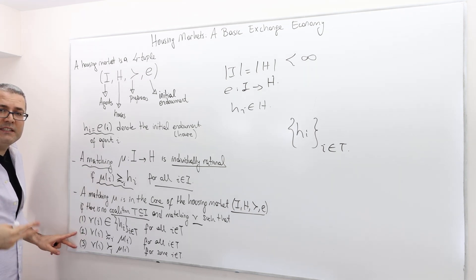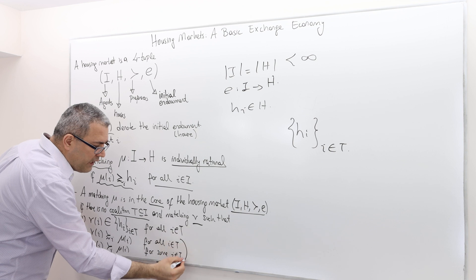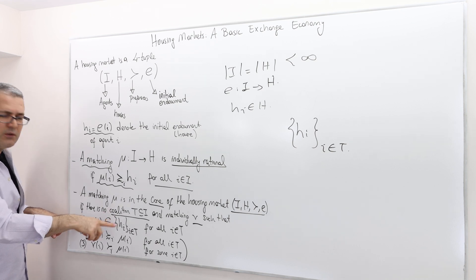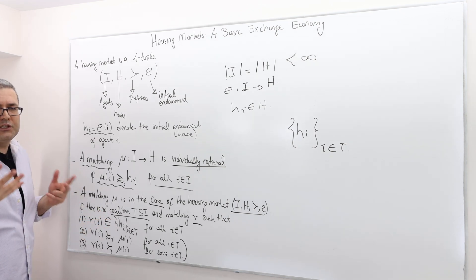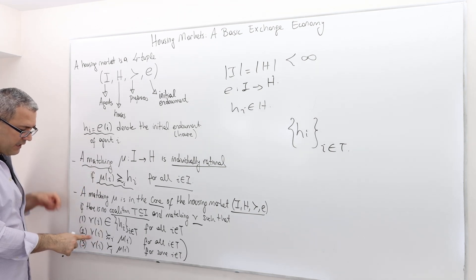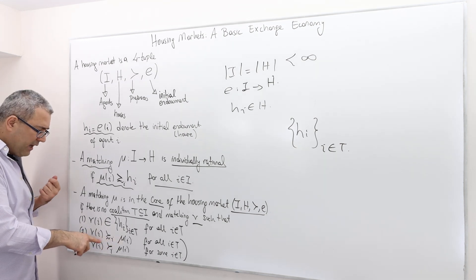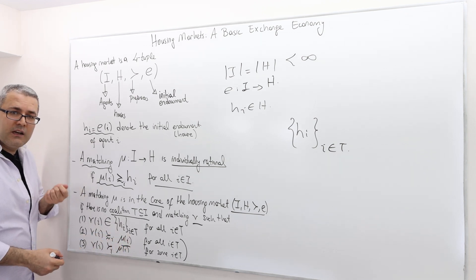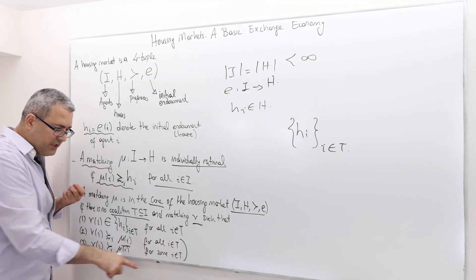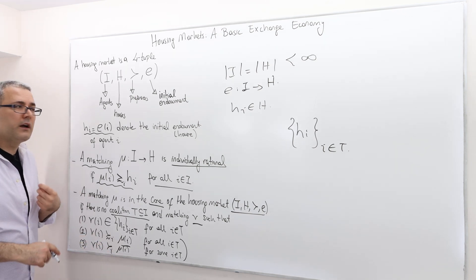The second and third conditions say it's improving or dominating for those individuals in sub-coalition T. The second condition says that under this new matching V, each individual thinks V(i) is at least as good as matching mu(i). And the third condition says at least one — some of the agents in group T — actually strictly prefers V(i) over mu(i). So that's the idea. Let's give a numerical example.